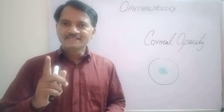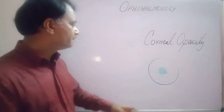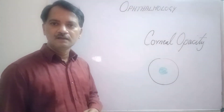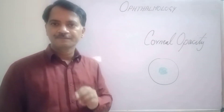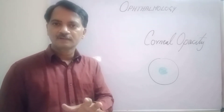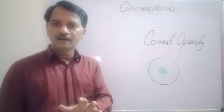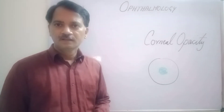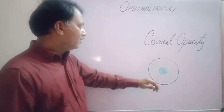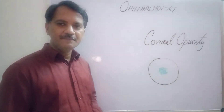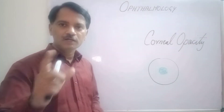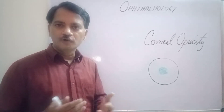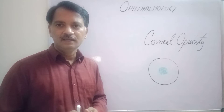On examining the patient, I noticed the central portion of the cornea is not transparent — it is not clear. There seems to be an opacity in the central portion of the cornea. After thoroughly examining this patient, I came to the conclusion that this is a nebular type of corneal opacity.